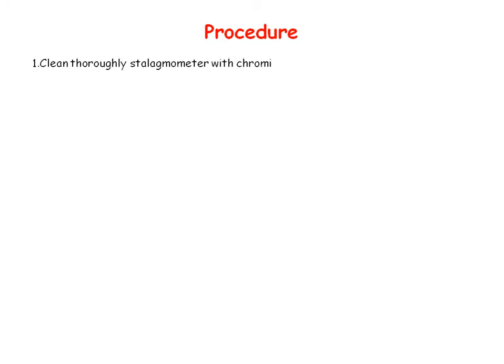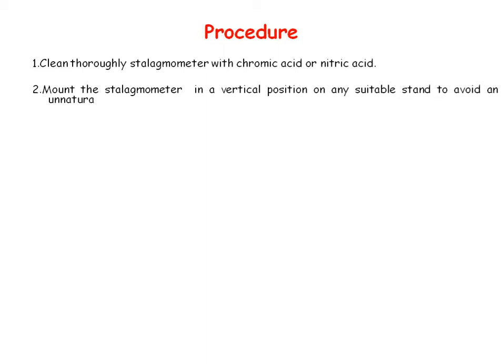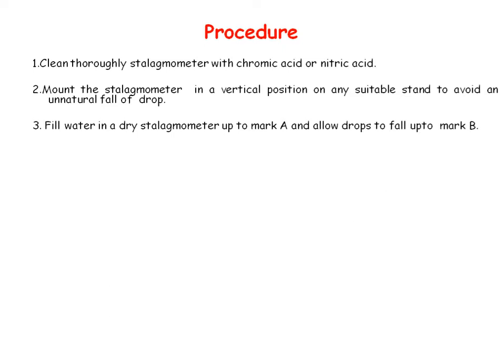The actual process: first, clean the stalagmometer thoroughly with chromic acid or nitric acid. Then mount the stalagmometer in vertical position on a suitable stand to avoid unnatural fall of drops. Fill water in the stalagmometer up to mark A and allow drops to fall until the liquid reaches mark B. Collect the liquid into a weighing bottle and determine the weight of the collected liquid.